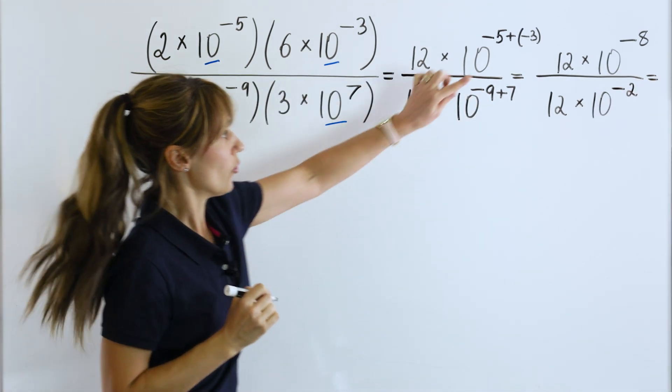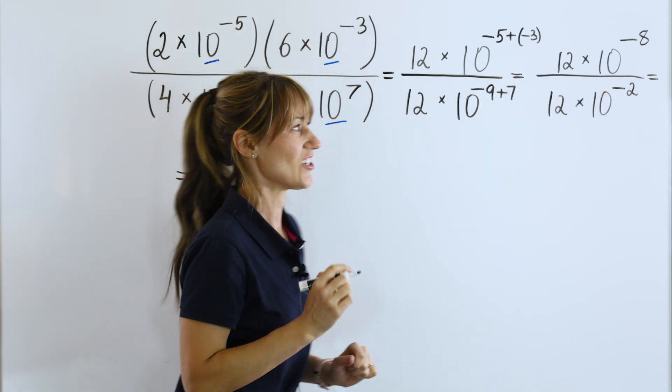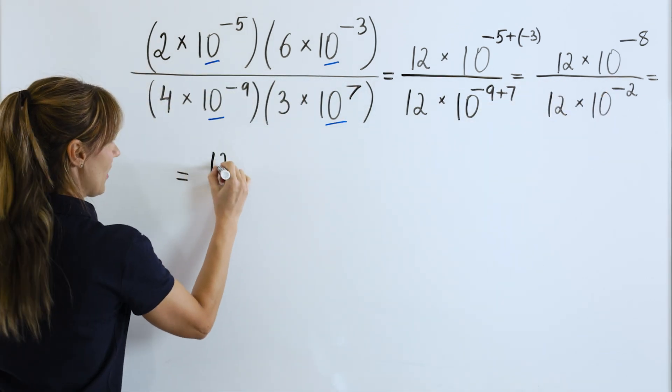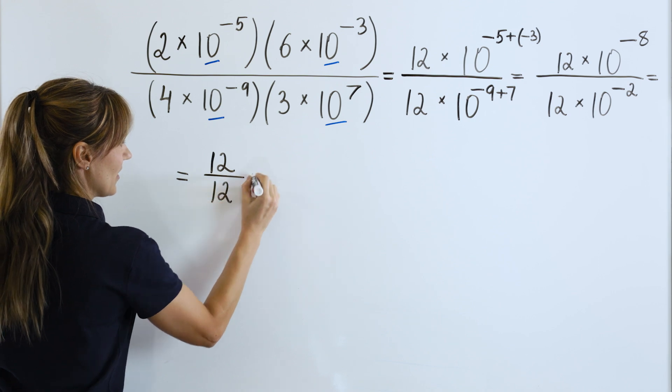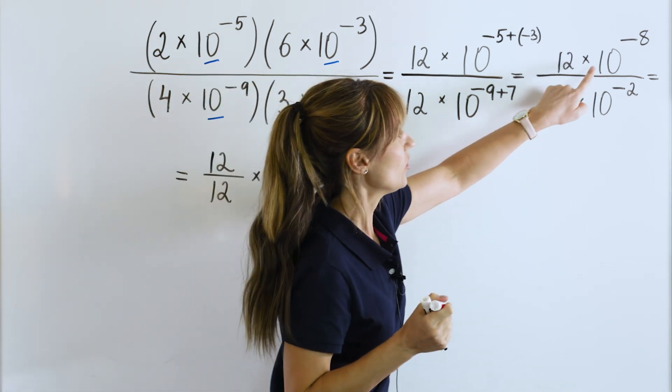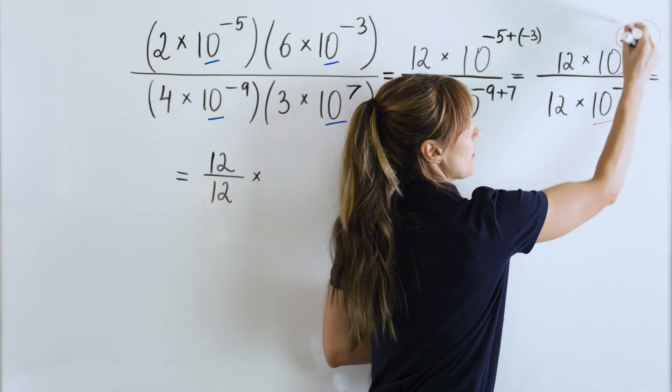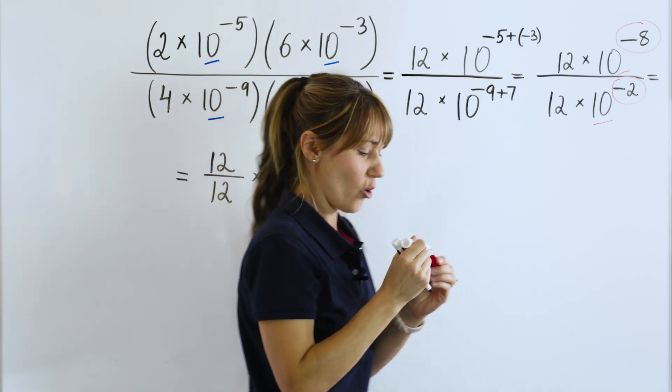Next, what are we going to do? We are going to divide 12 by 12 because this bar means division. So, we will divide 12 by 12. Now, listen carefully. When you divide with the same base, the base is 10, you will subtract the exponents.